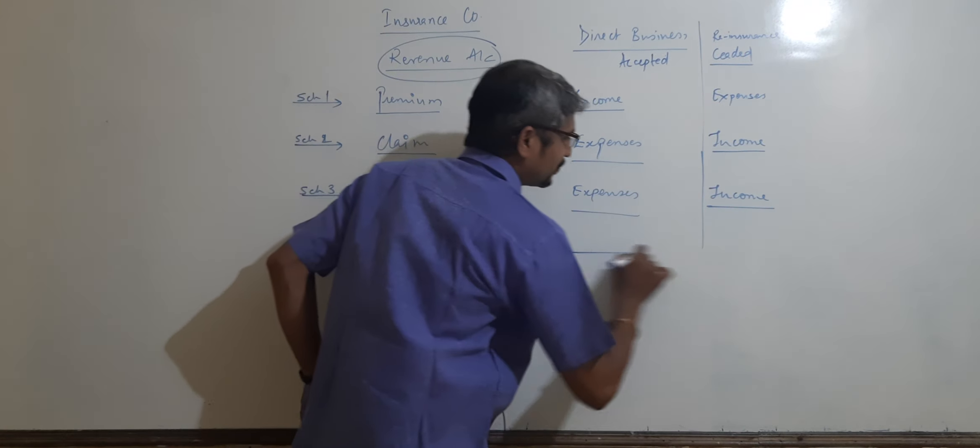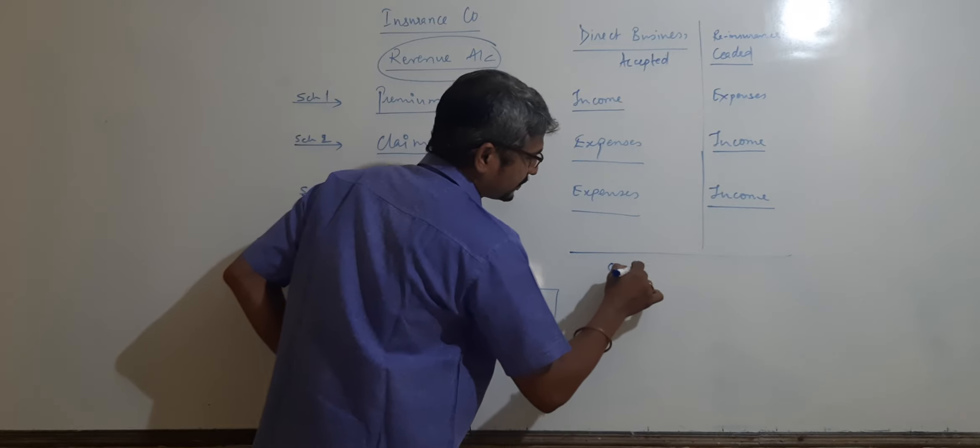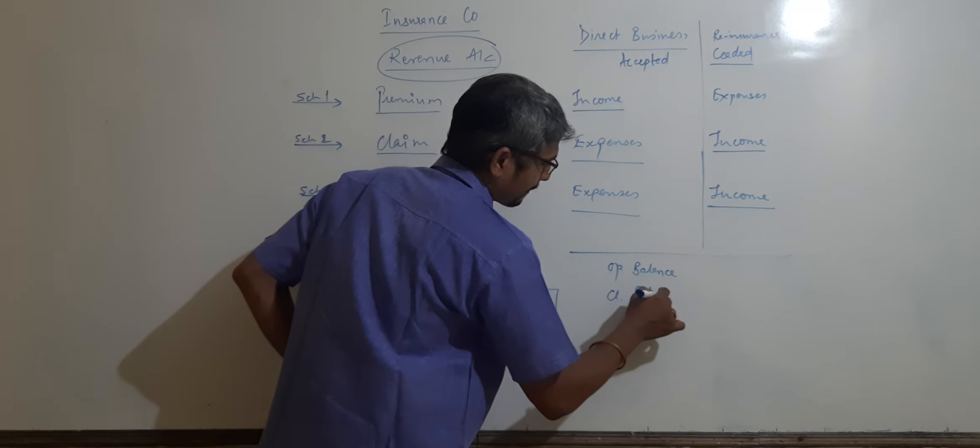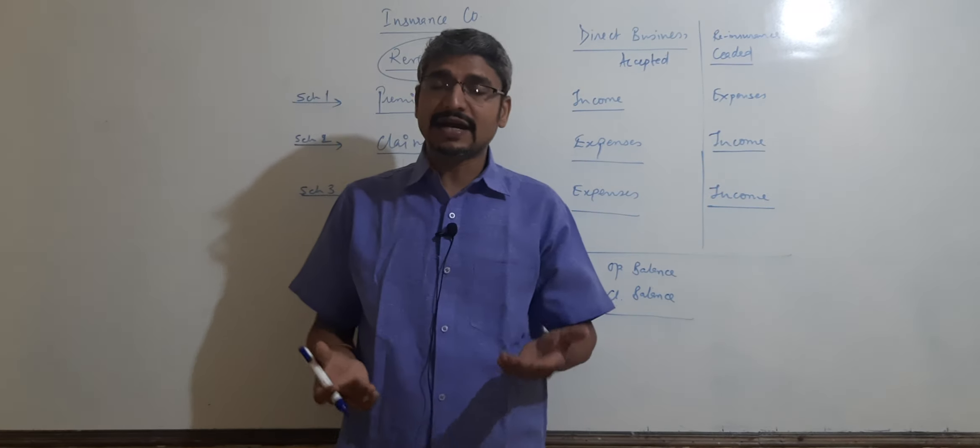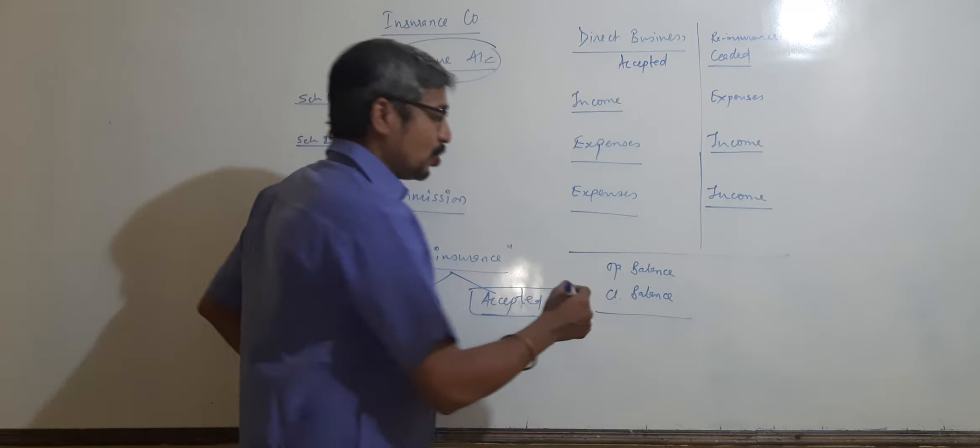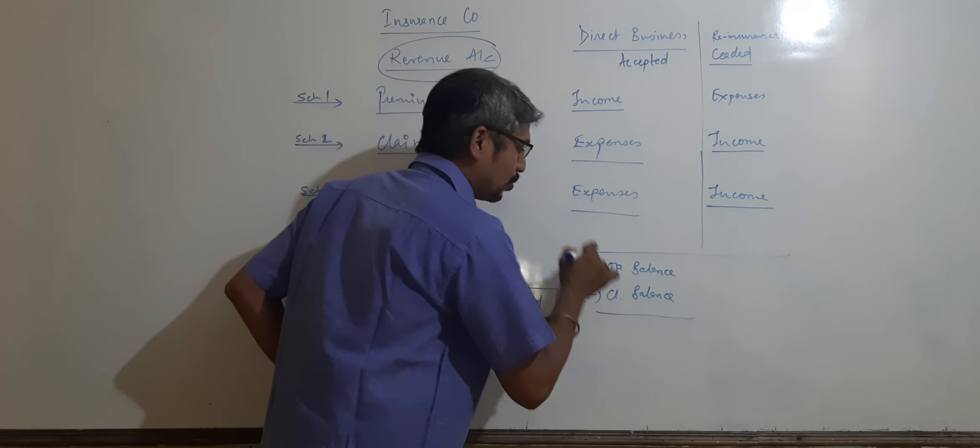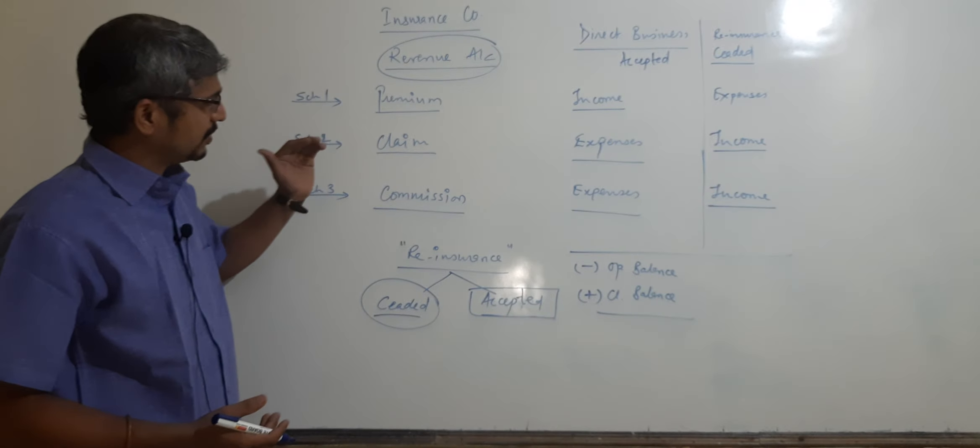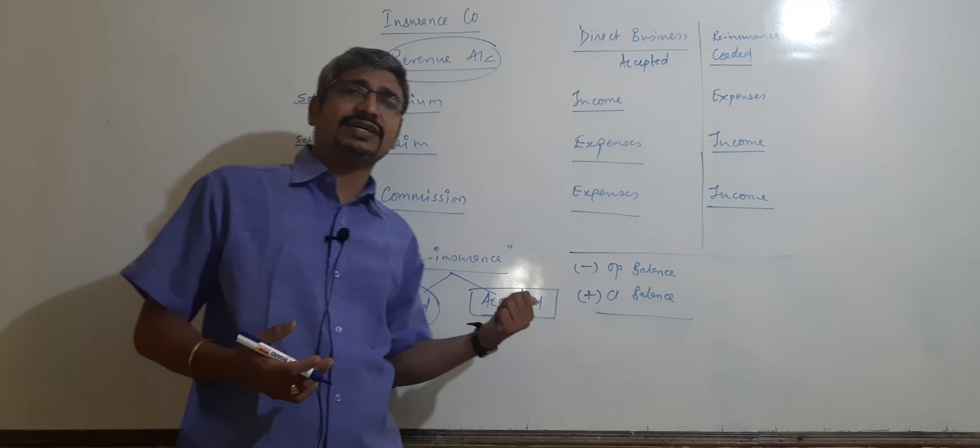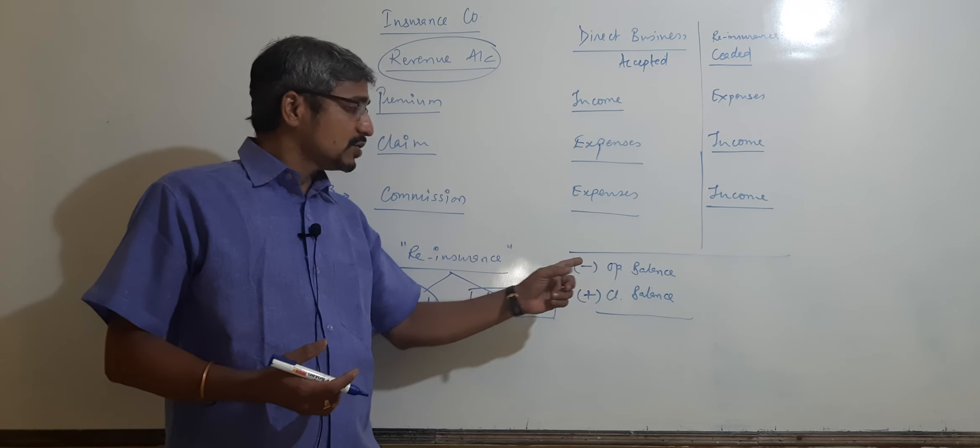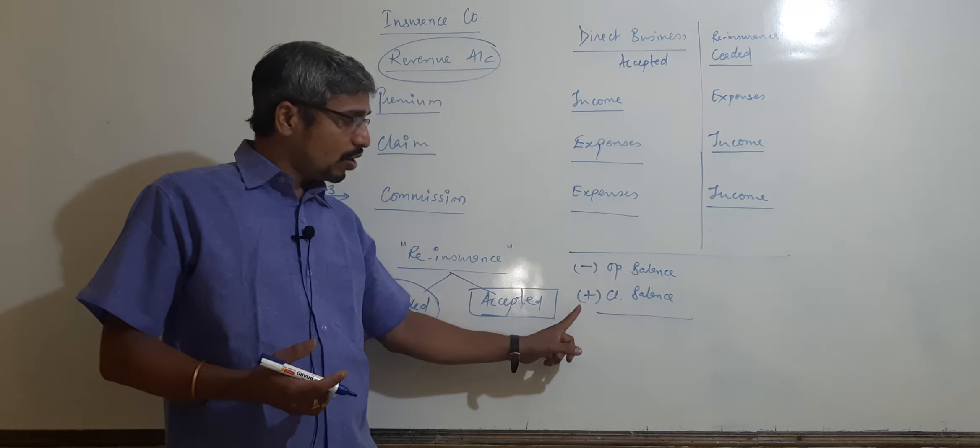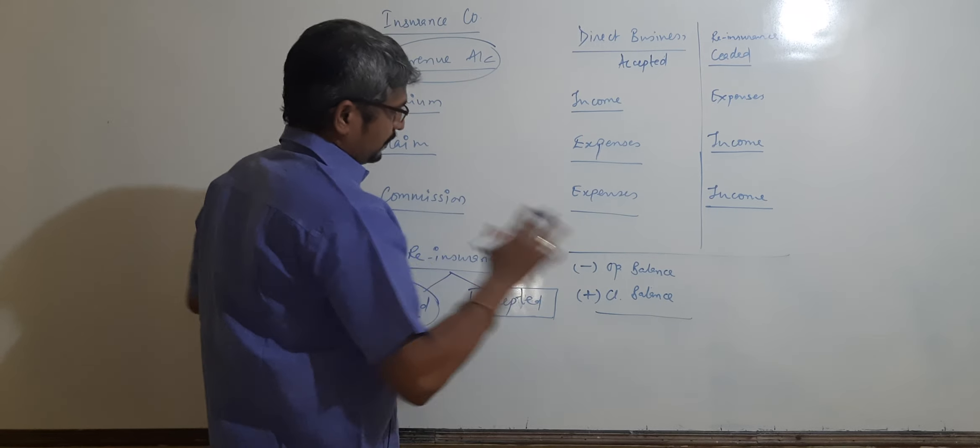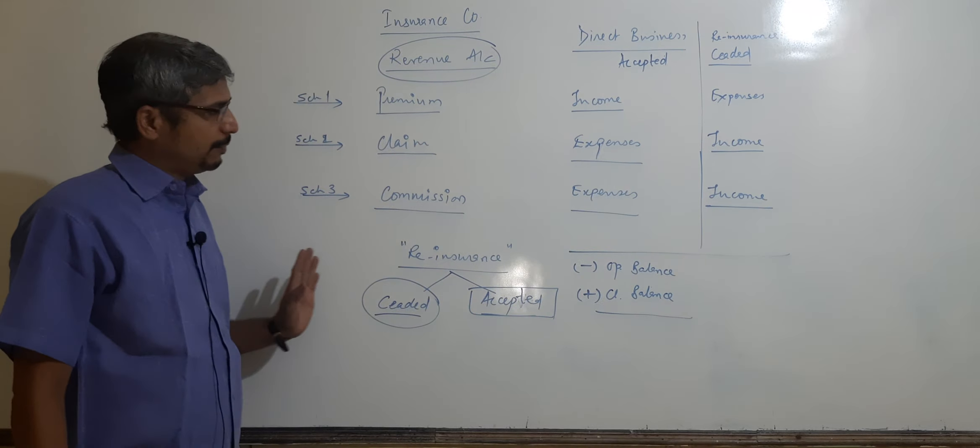And the rest of the thing about opening balance and closing balance. So this is how we need to keep this balance. We will prepare it with closing balance and opening balance. We need to add the closing balance and deduct that for current accounts. So this is how we can do revenue account with the help of this much knowledge.